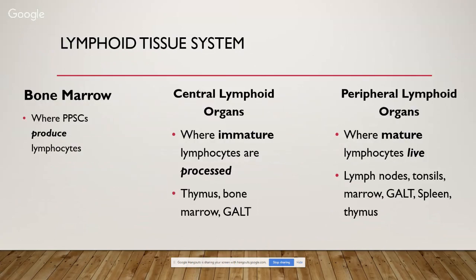The lymphoid tissue system is comprised of bone marrow, central lymphoid organs, and peripheral lymphoid organs. Bone marrow is where stem cells produce lymphocytes. Central lymphoid organs — the thymus, bone marrow, and gut-associated lymphoid tissue — are where immature lymphocytes are processed into different cell lines like T cells or B cells. Peripheral lymphoid organs — where mature lymphocytes live — include lymph nodes, tonsils, bone marrow, GALT, spleen, and thymus.